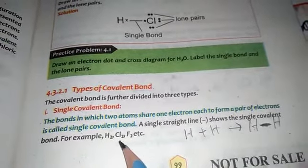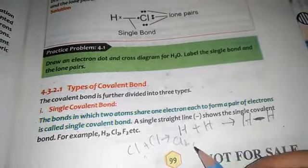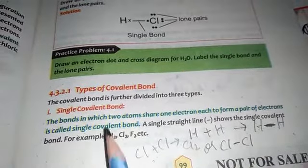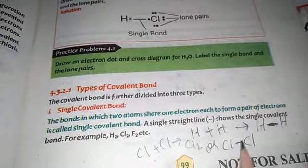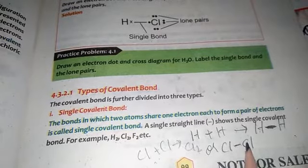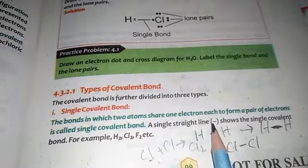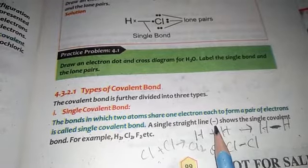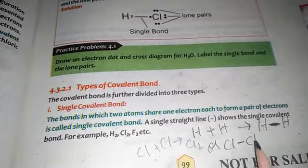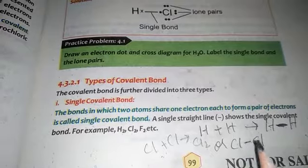Similarly, Cl plus Cl combine together to form Cl2. This dash represents a single covalent bond. In a single covalent bond, two atoms share one electron each: this chlorine shares its one electron with the other chlorine atom, and that chlorine atom shares its one electron back. Due to this sharing, a straight line is formed between them, which is known as the covalent bond. Both chlorine atoms mutually share their electrons, and by this sharing a single covalent bond is formed.